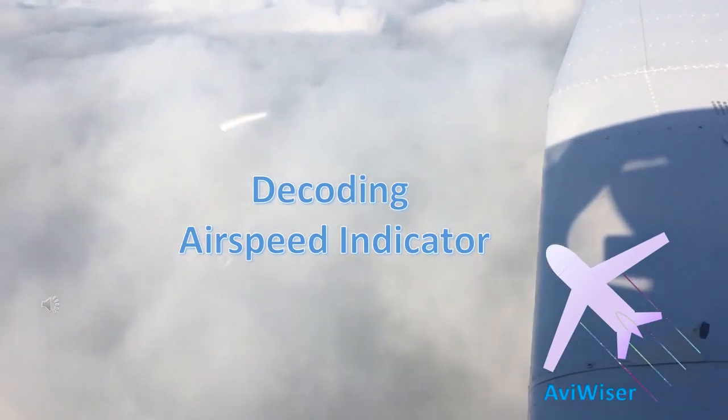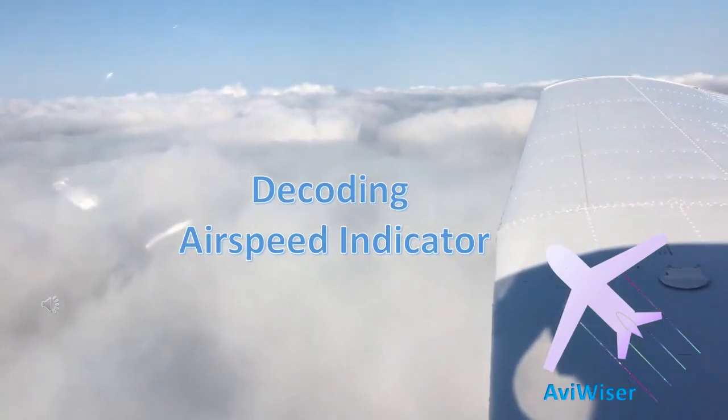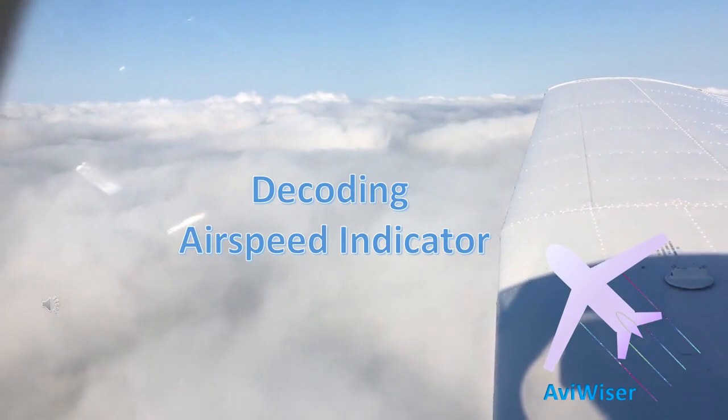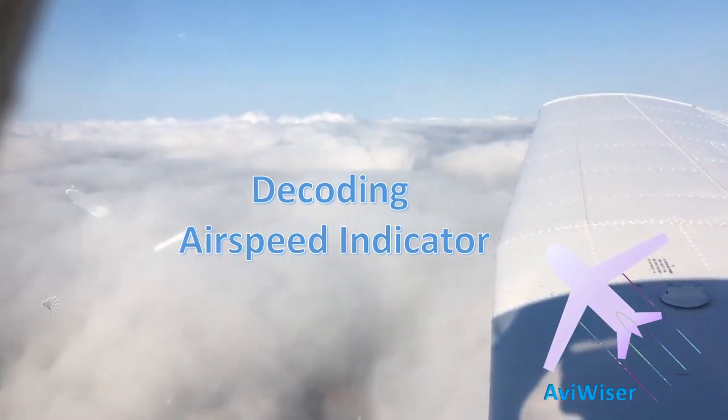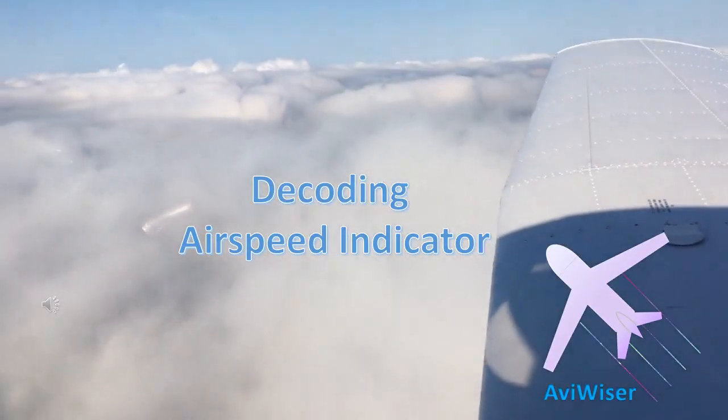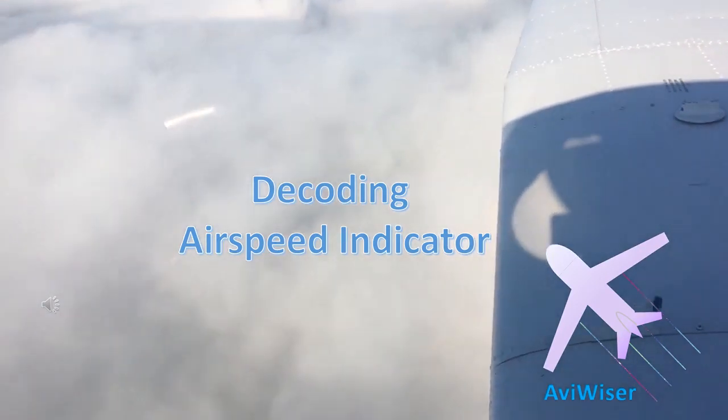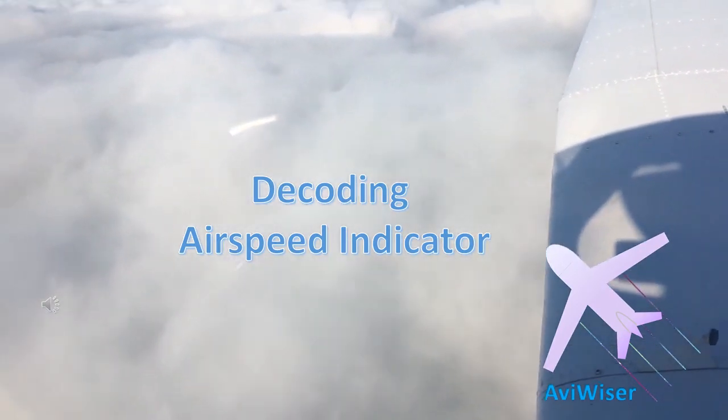Up in the skies, the airspeed indicator stands as a beacon of vital information. Today, we're going to uncover its inner workings, examine potential errors, decode some important v-speed colors, and then explore the three types of airspeed.